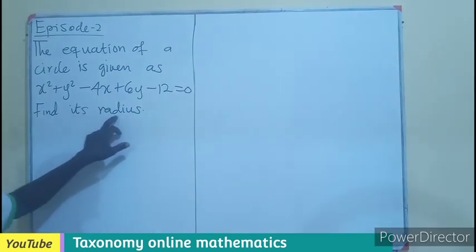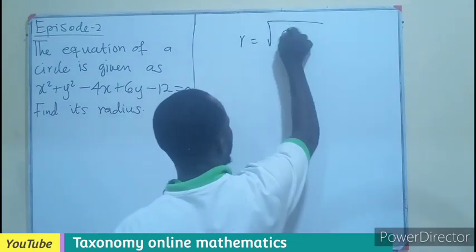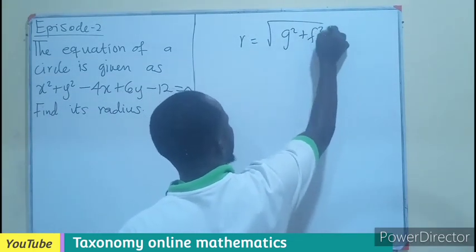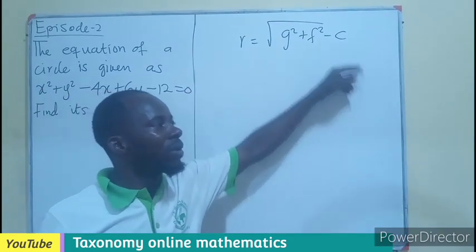Before we can find the radius, we know that the radius is in this form, whereby we need the value of g, f, and c.